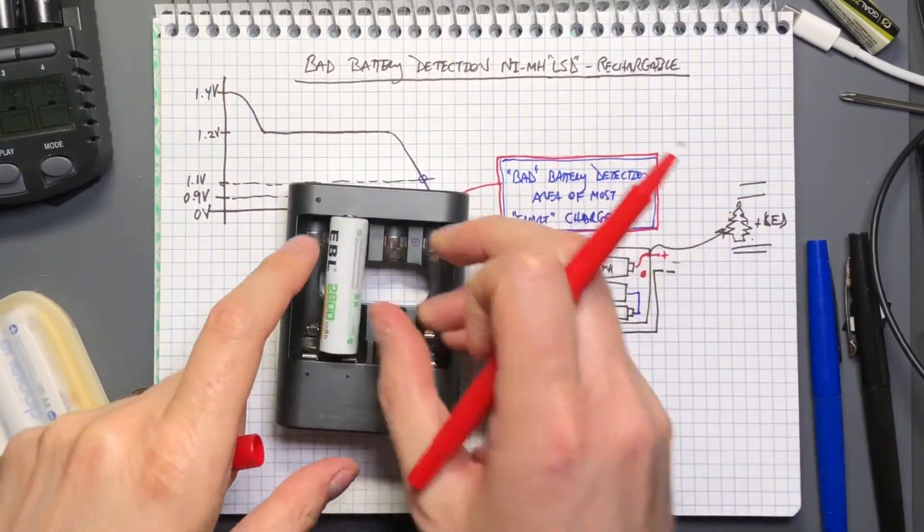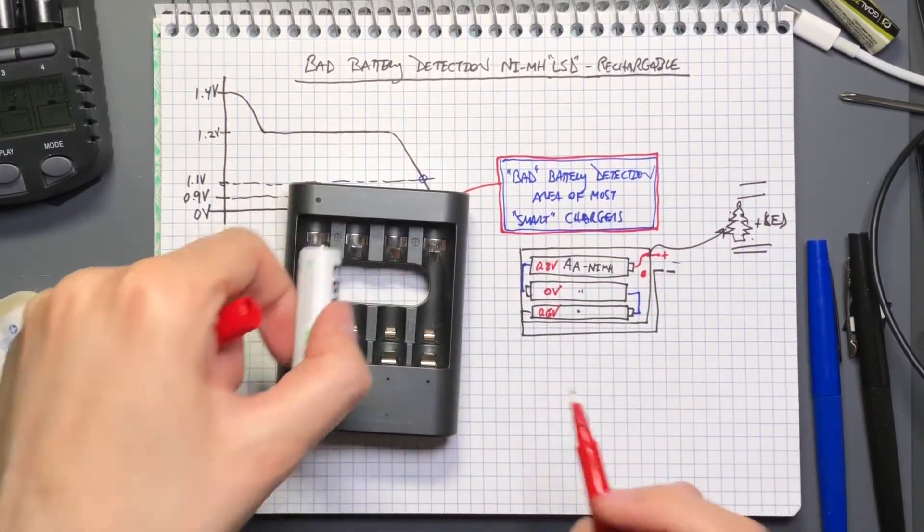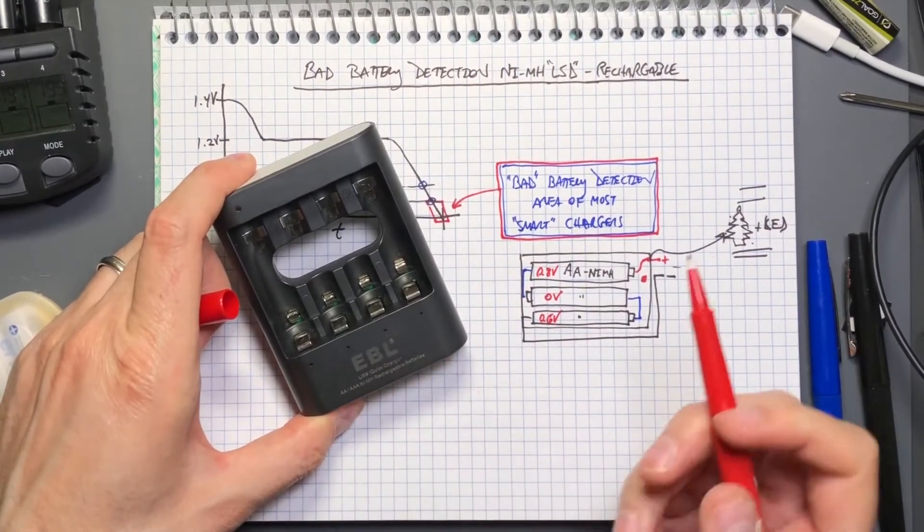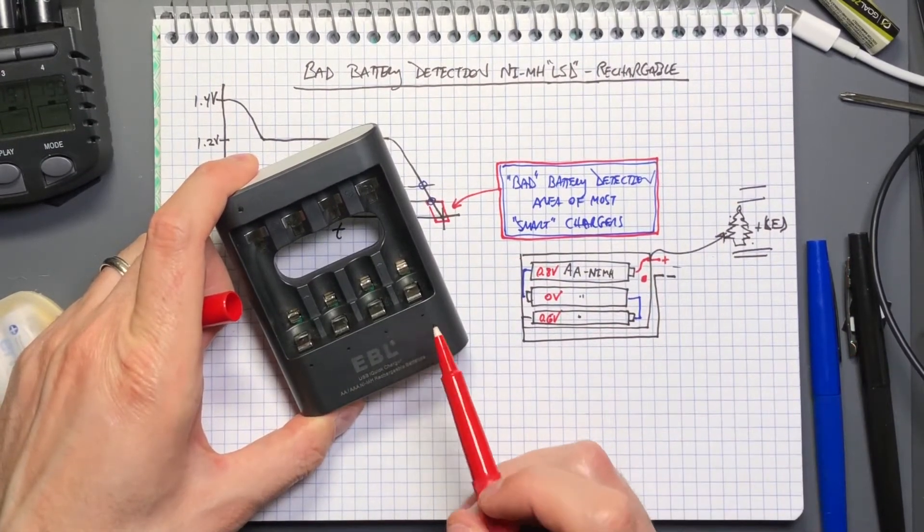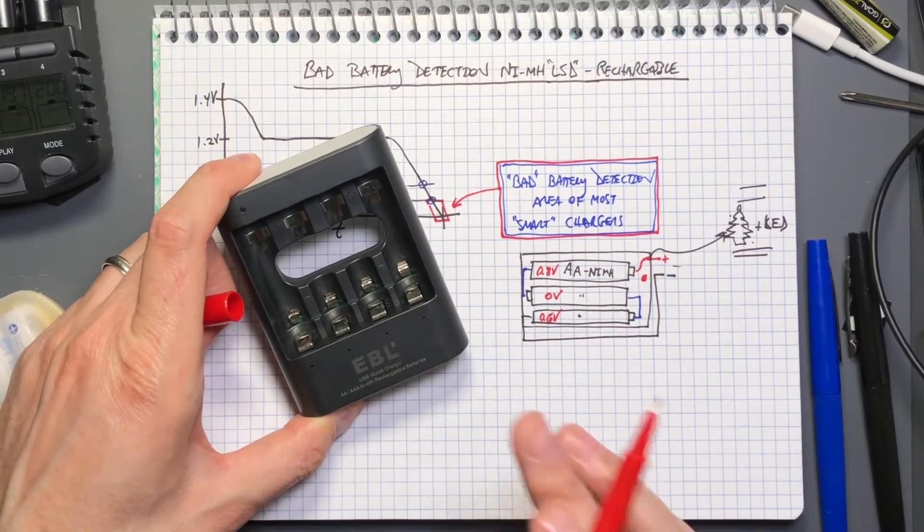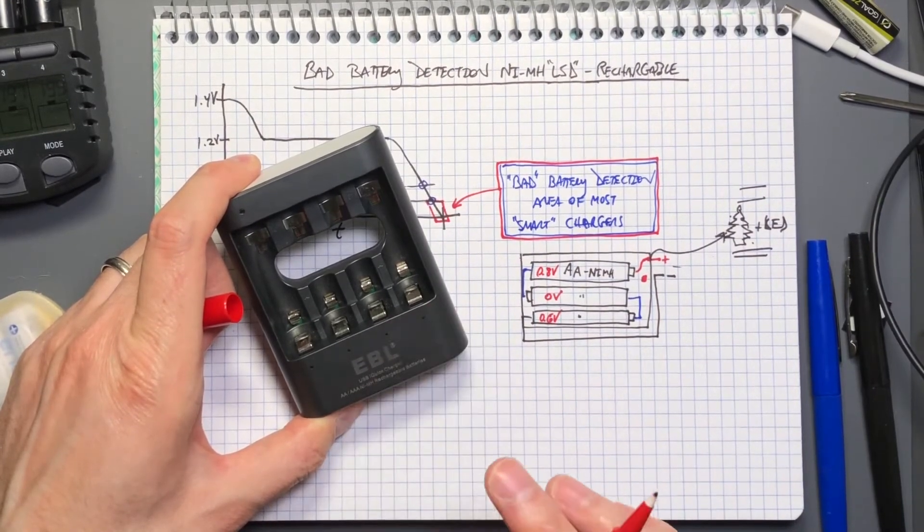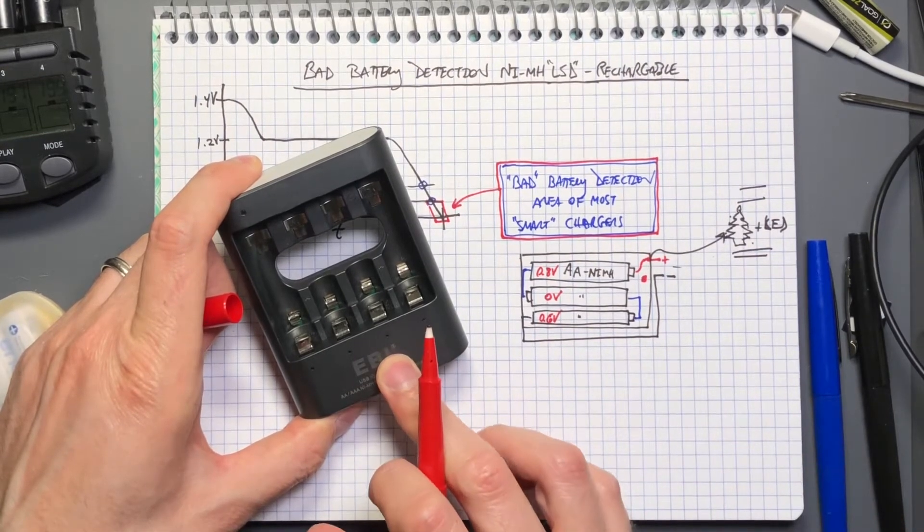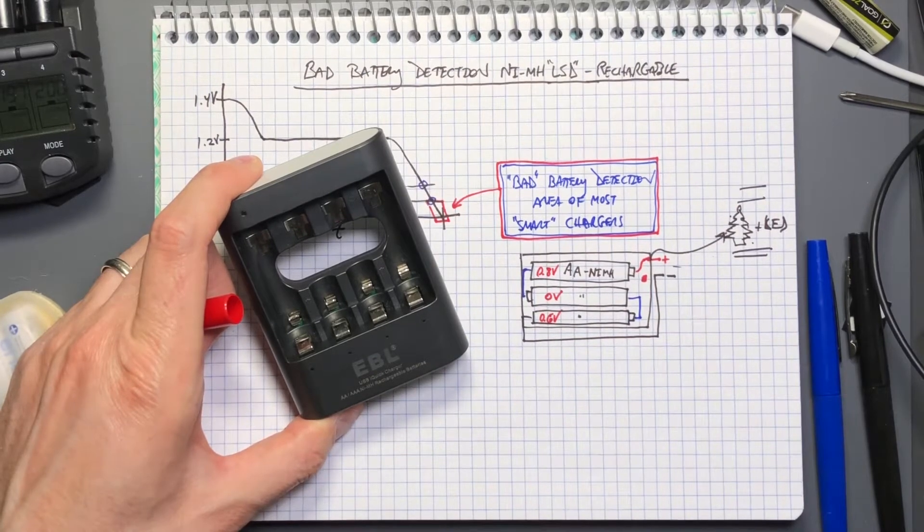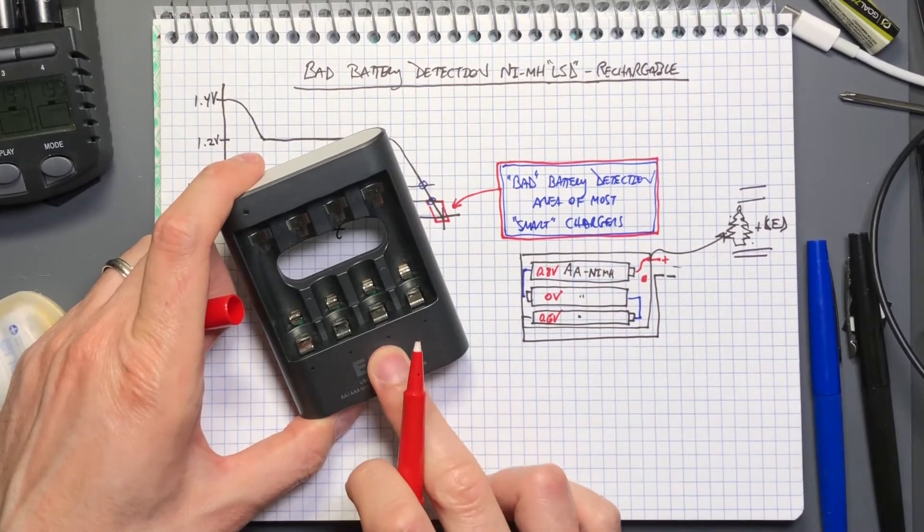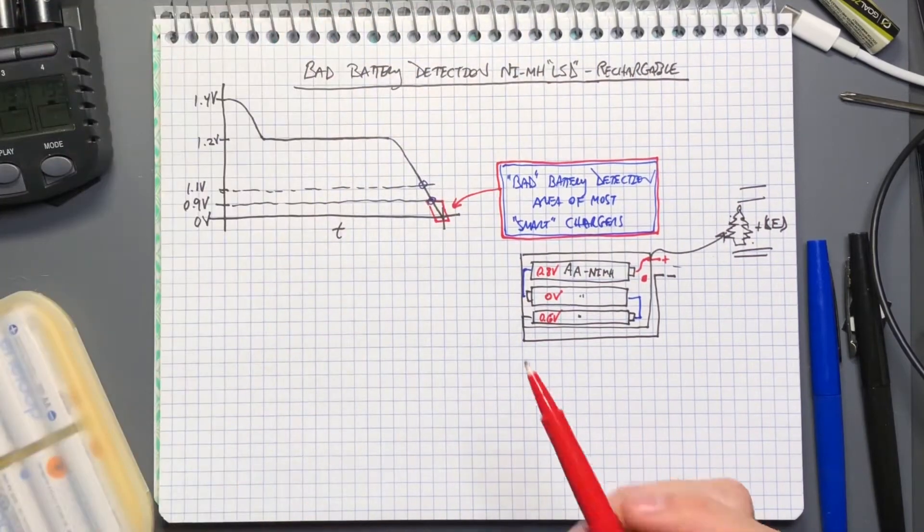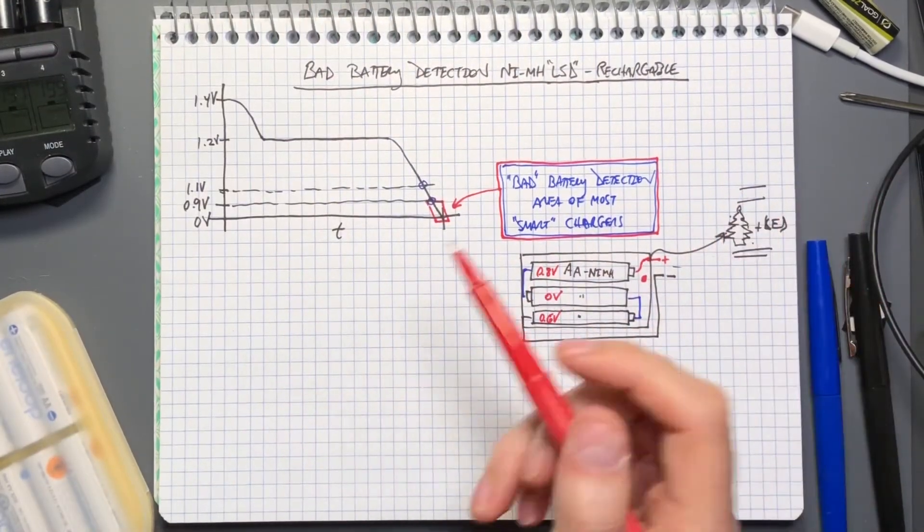Take the cells out. I throw them in this EBL charger and the charger will power on, show its indicators, show red, and then try to charge. Then it'll either stop charging immediately and flash the LED red saying it's a bad battery, or it will strangely charge the battery up super fast and then consider that the battery's been fully charged.